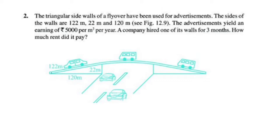The triangular side walls of a flyover have been used for advertisement. The sides of the walls are 122m, 22m, and 120m.